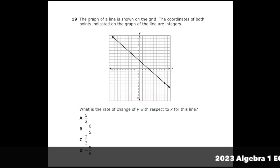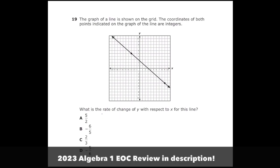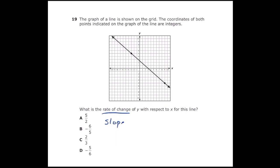This is number 19 from the 2022 Algebra 1 EOC. The graph of a line is shown on the grid. The coordinates of both points indicated on the graph of the line are integers. What is the rate of change of y with respect to x for this line? I know that the rate of change is the same thing as slope. So I'm going to go ahead and make a right triangle with the two points that they give us. That way I can find the slope.